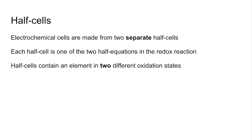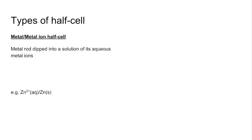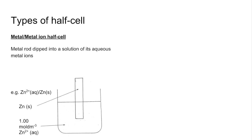Half cells contain an element in two different oxidation states. The first type is the metal/metal ion half cell. In these, you have a metal rod dipped into a solution containing ions. The example here is the Zn²⁺/Zn half cell — a zinc solid rod dipped into a one mole per decimetre cubed solution of Zn²⁺ ions, giving two oxidation states of zinc: zero for the rod and +2 for the ions.